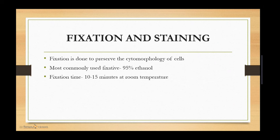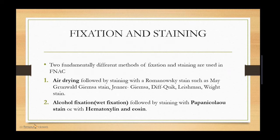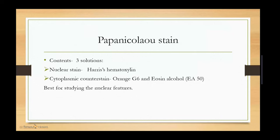Fixation is done to preserve the cytomorphology of cells. The most commonly used fixative is 95% ethanol, with a fixation time of 10 to 15 minutes at room temperature. There are two methods: air drying followed by staining with a Romanowski stain such as May-Grünwald, Giemsa, Diff-Quik, or Leishman-Wright stain; and alcohol or wet fixation followed by staining with Papanicolaou stain and/or Hematoxylin and Eosin. Papanicolaou stain contains three solutions: the nuclear stain Harris Hematoxylin, cytoplasmic counterstain Orange G6, and Eosin Alcohol.